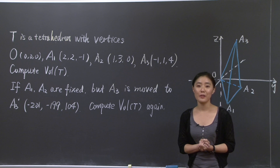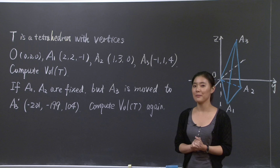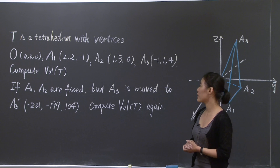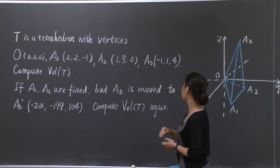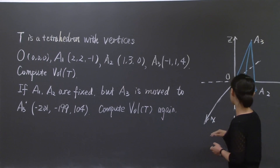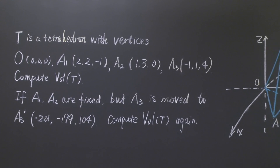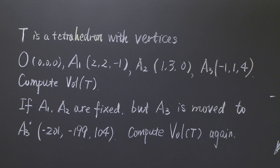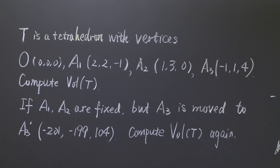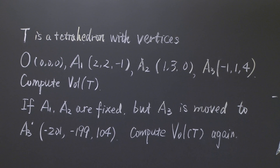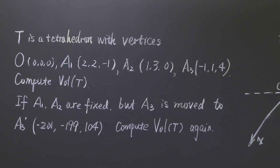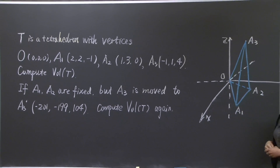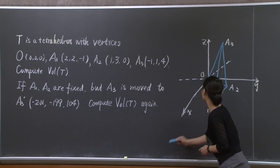Today, we're going to apply this fact to solve the following problem. I have a tetrahedron T in this 3D space. The vertices of T are given by O, which is the origin, A1, A2, and A3. I have highlighted this tetrahedron using the blue chalk — so this is T.